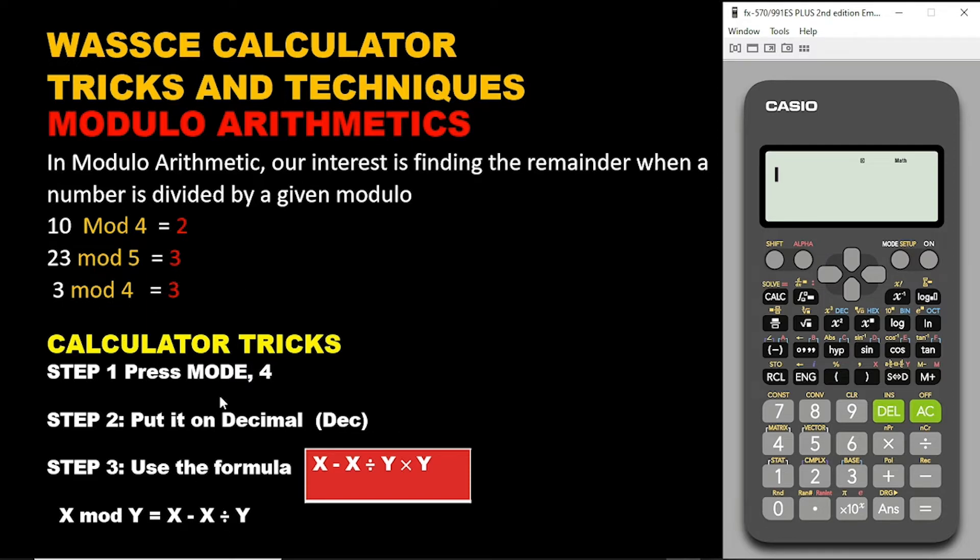Now the steps that you need to follow is that first you press the mode and then you press the number 4. So you press the mode and then you pick option 4. Now at all times, if you are using your calculator to solve modulo arithmetics, make sure that you see dec, that is decimal, on the surface of the calculator. This is so important.